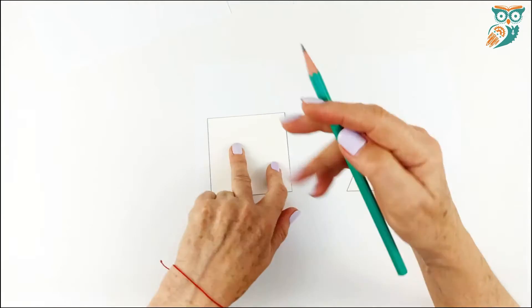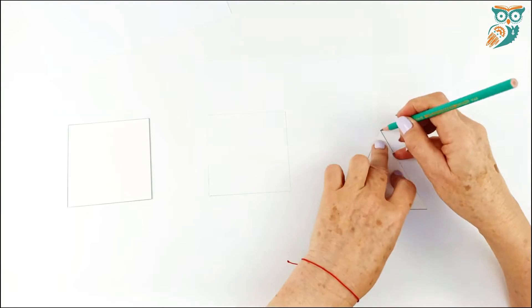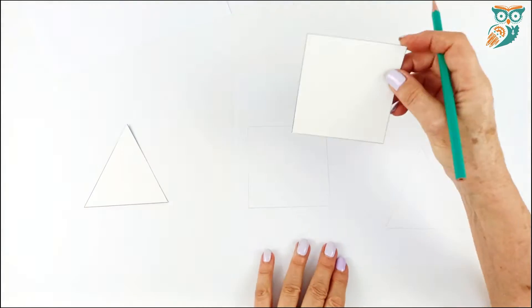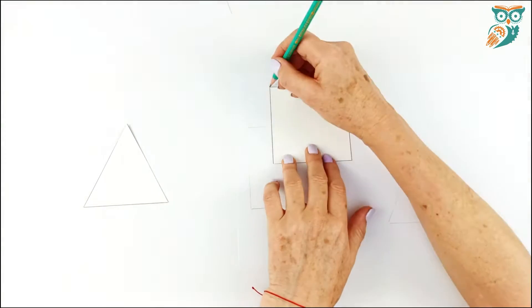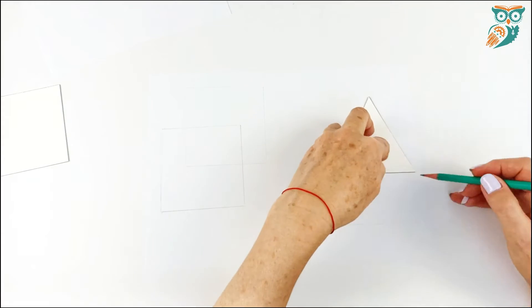So the first thing we're gonna do is take a very basic square and a triangle and we're gonna trace them onto our paper. And then we're going to offset and trace again. So we're just moving it up and to the right a little bit.